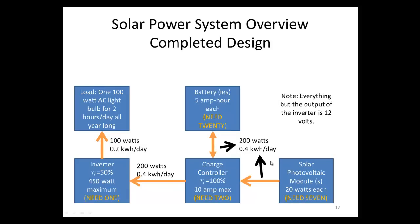We're now finished with our solar power system calculations. To review: we need 1 inverter, 2 charge controllers, 20 batteries, and 7 solar modules. The next step would be to evaluate how expensive this system would be — that's left as an exercise for the viewer. Thanks for watching.